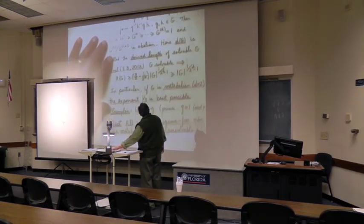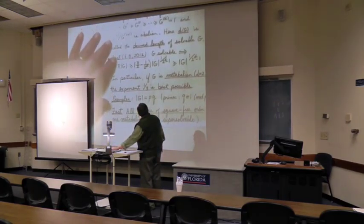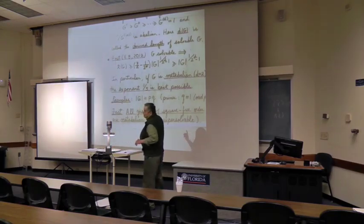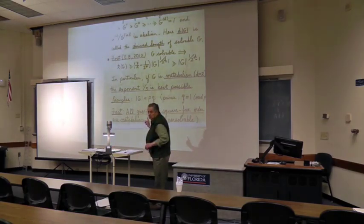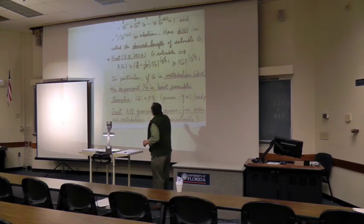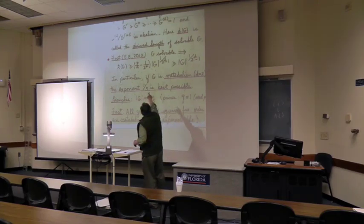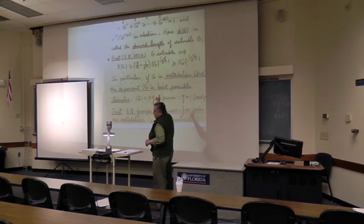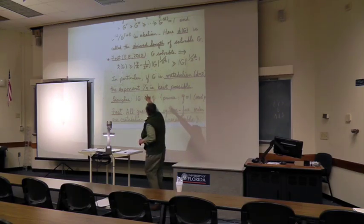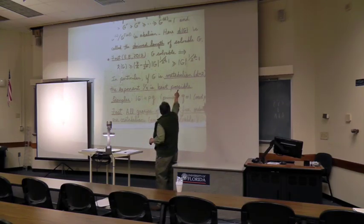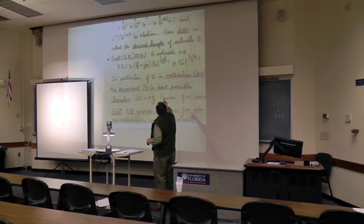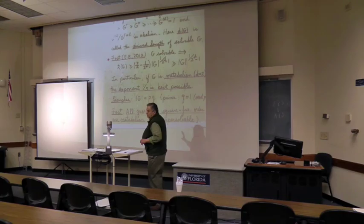Here's something that has turned out to be very valuable: if you knew the derived length was small, d was small, it didn't take you very long, the class number would be bigger than this. The point is that it's an epsilon, a fractional power of the order of the group. And that product, that little thing in parentheses, is always greater or equal to 1. So that's the final thing I'm interested in right now. In particular, if G is metabelian, that is the derived length is 2, the exponent one-third is best possible.